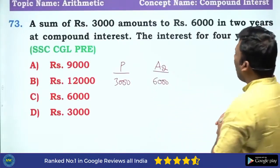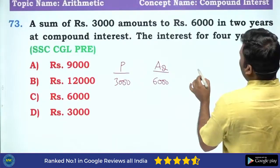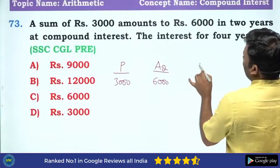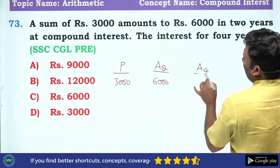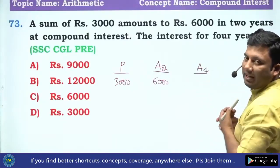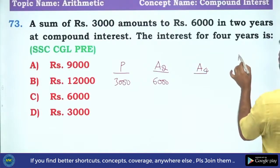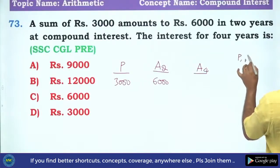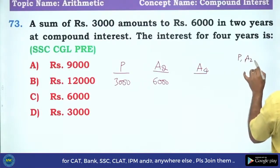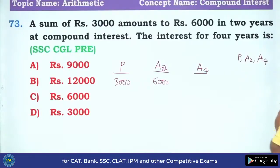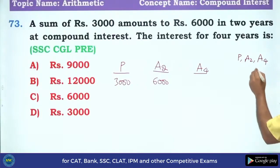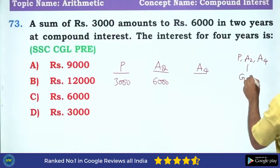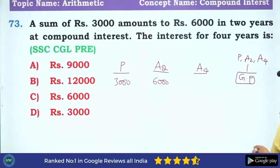We need to find the interest after 4 years, so let us take A4. Now see here — I discussed P, A2, and A4. The time periods are equal at 2 years each, which means P, A2, and A4 are in geometric progression.